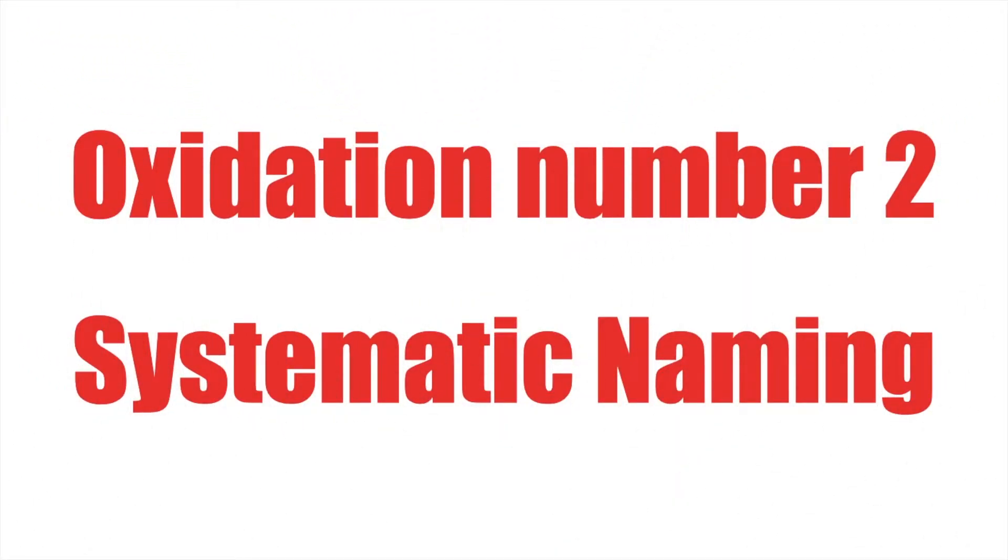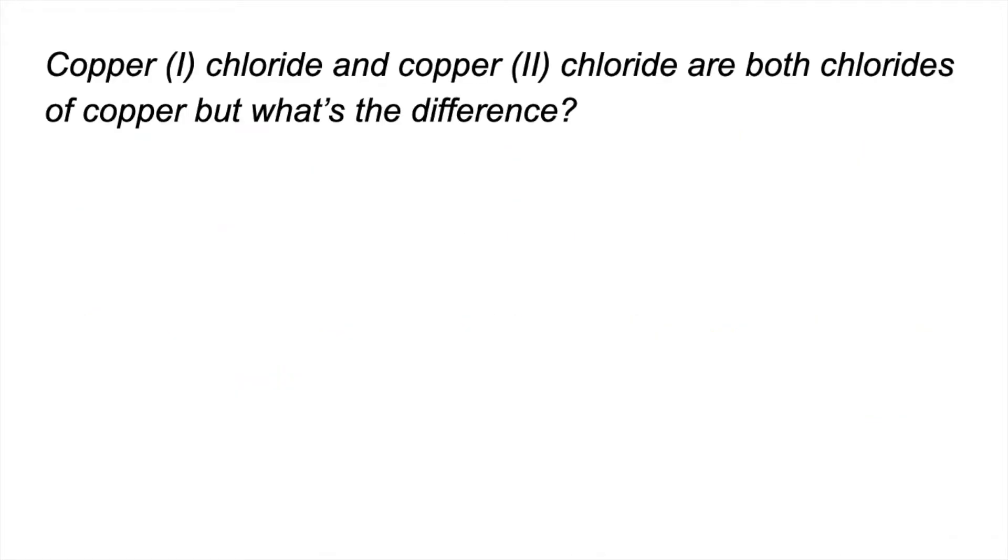In this second oxidation number video I'm going to look at systematic naming. So we'll start with this. Copper(I) chloride and copper(II) chloride are both chlorides of copper, but what's the difference?